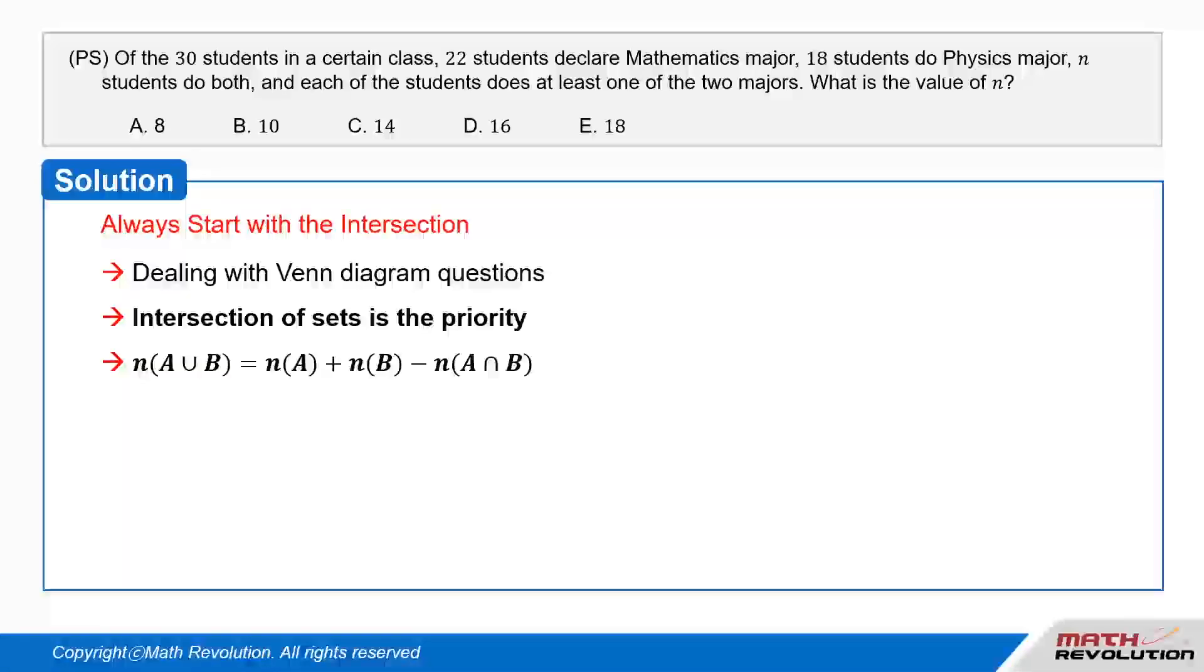Solution. The intersection of sets is the priority. While dealing with Venn diagram questions, the intersection of sets is a priority that we have to set.